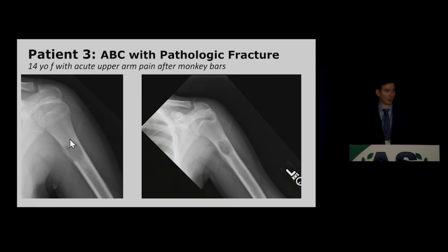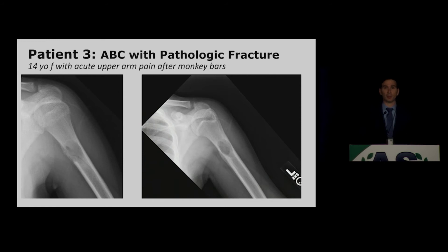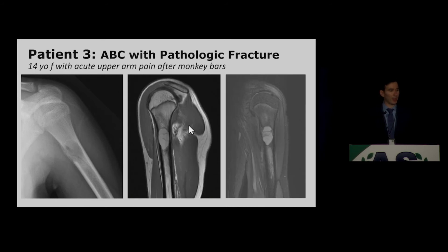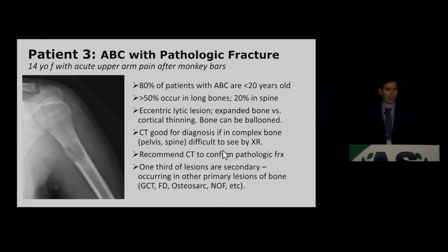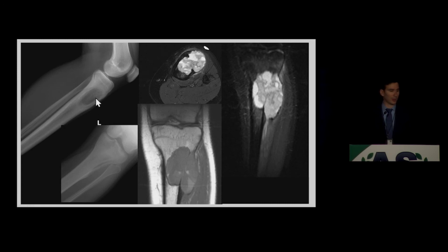Patient 3 is an aneurysmal bone cyst (ABC) with a pathologic fracture. These are eccentrically located with a sharp, narrow zone of transition and often lack a matrix on plain film. In the ED, if you suspect a pathologic fracture, CT is a great modality to evaluate it. These lesions can also occur in the pelvis and spine, and CT is good for further workup when characteristics are uncertain. On MRI, you can see septations and classically layering fluid-fluid levels on axial images. 80% of patients are under 20, and 50% occur in long bones.